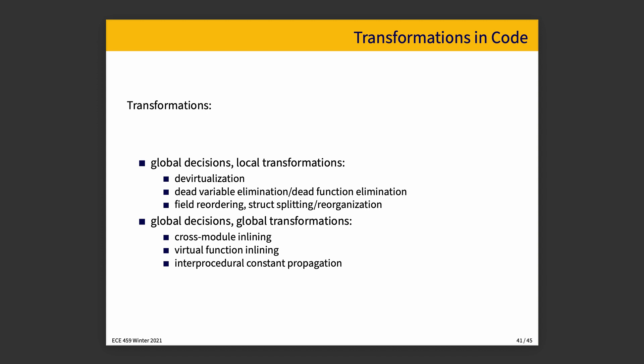And then there are global decisions with global transformations, where we inline something across a couple of modules, inline virtual functions where we know it is safe to do so, and where we have constant propagation across various procedures from one part of the program to another — not just moving it from function A to function B, but from module C to module D.